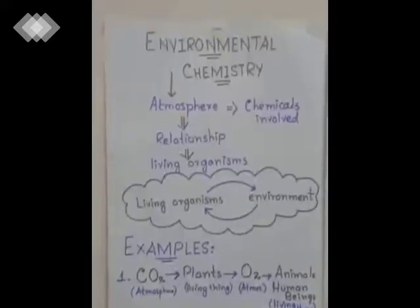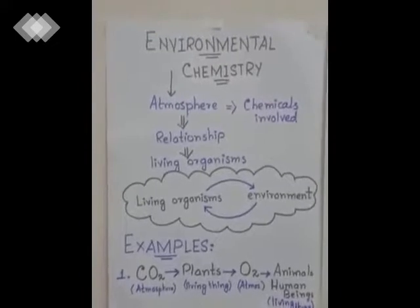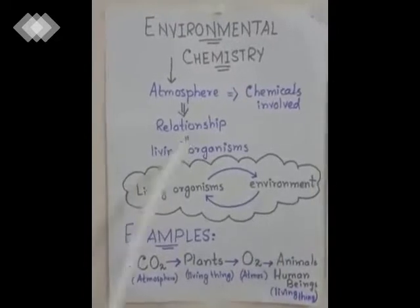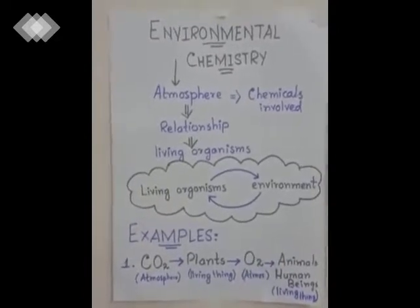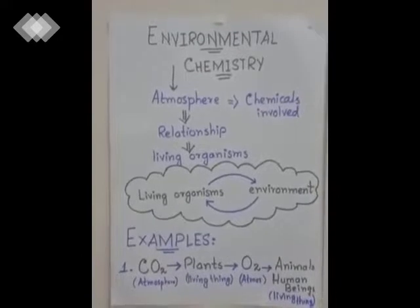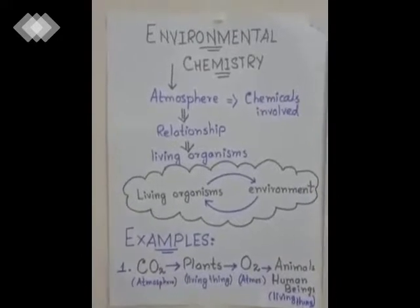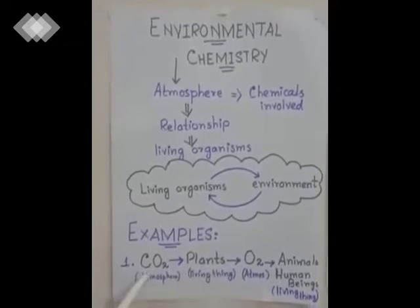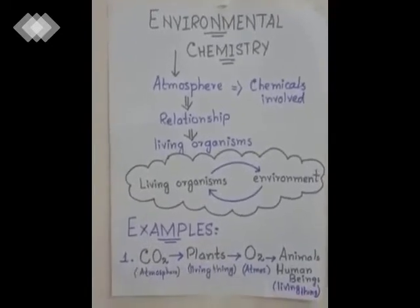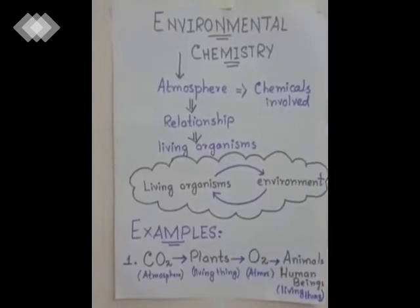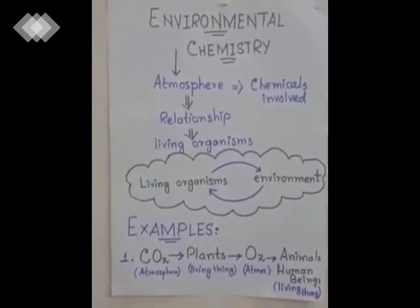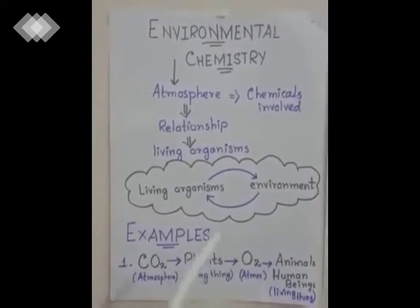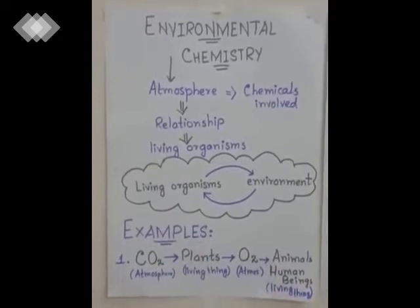The last branch is environmental chemistry, where we study the impact of living organisms on the environment and the impact of the environment on living organisms. For example, carbon dioxide in the atmosphere is taken by plants, which convert it into oxygen. That oxygen is then taken by animals and human beings — illustrating the mutual impact between the atmosphere and living organisms.